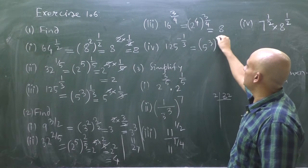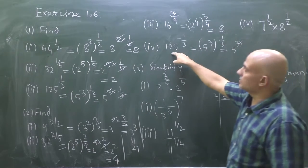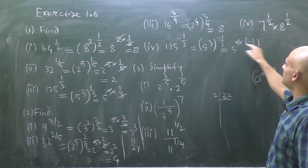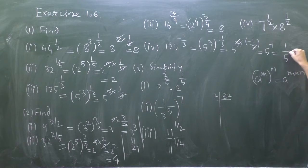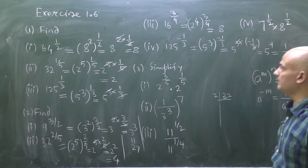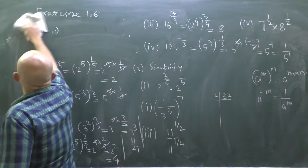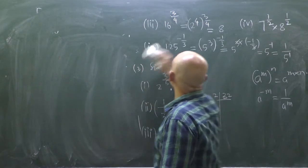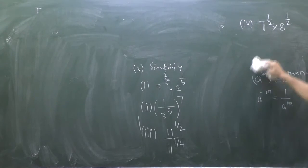Next, 5 to the power 3, held to the power minus 1/3. 5^3 is 125, and 3 × (−1/3): the 3s cancel, giving 5 to the power minus 1. Since a^(−m) = 1/a^m, the answer is 1/5.